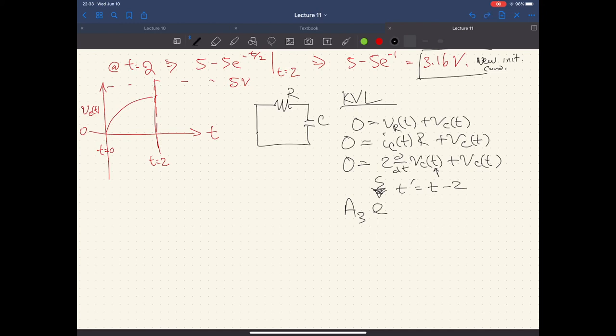So this is e to the minus T prime over two volts. And that's going to be my total solution because I don't have a particular solution because no forcing function or another way to think about it is my forcing function is of the form zero. Ergo, my particular solution is of the form zero. And so this is just a big fat donut. All right. Oh man, I could totally go for a donut.